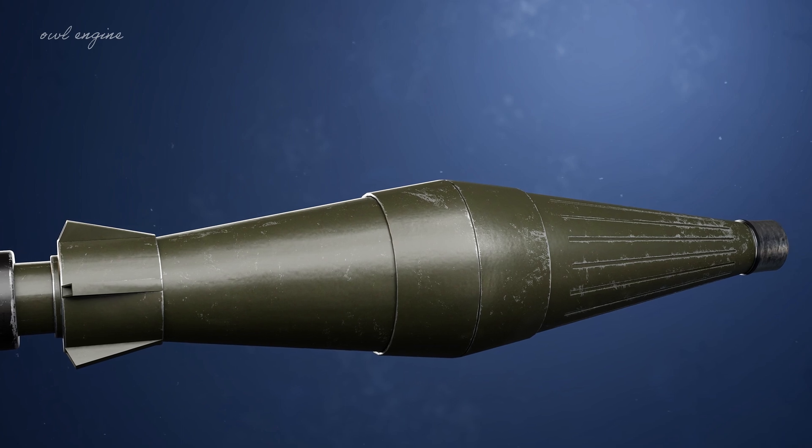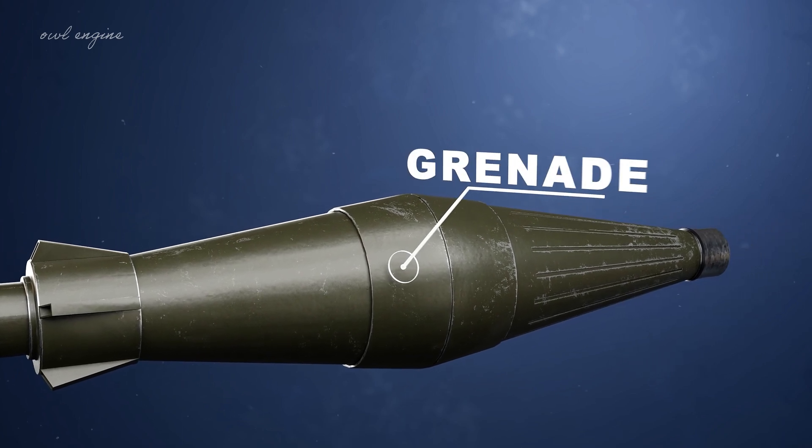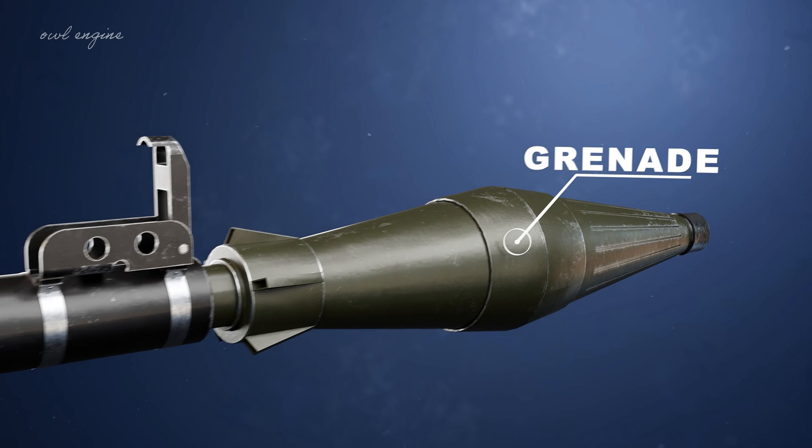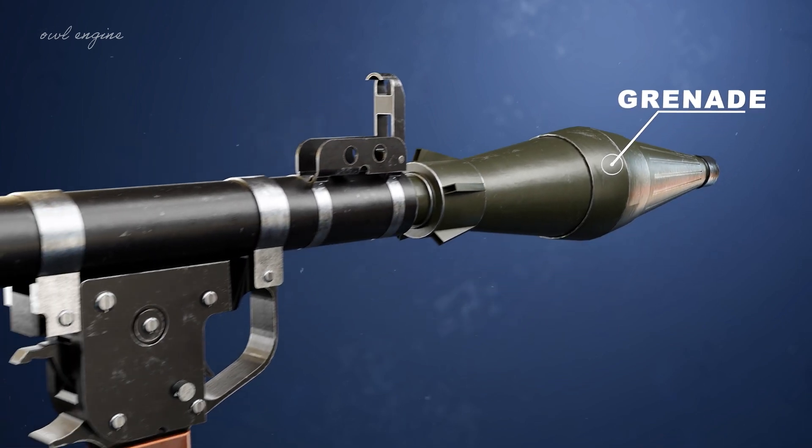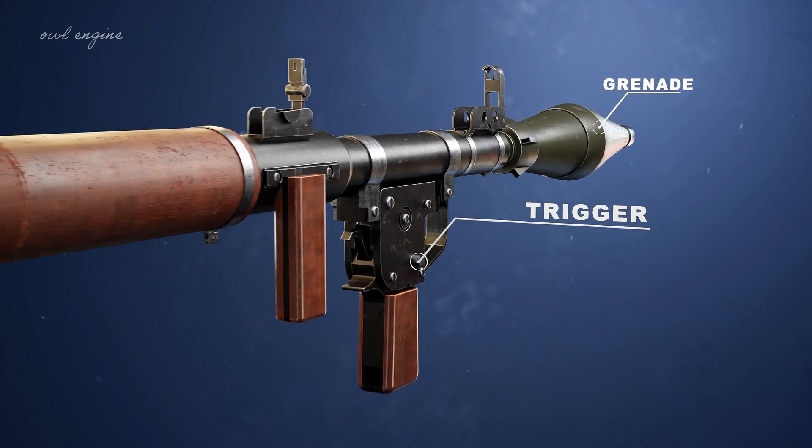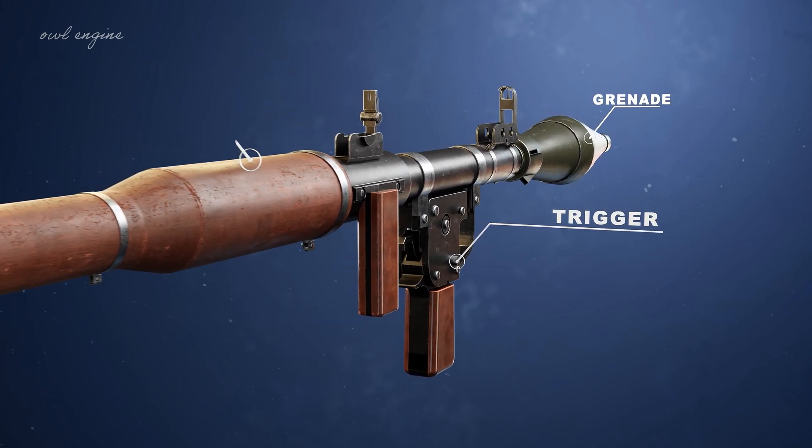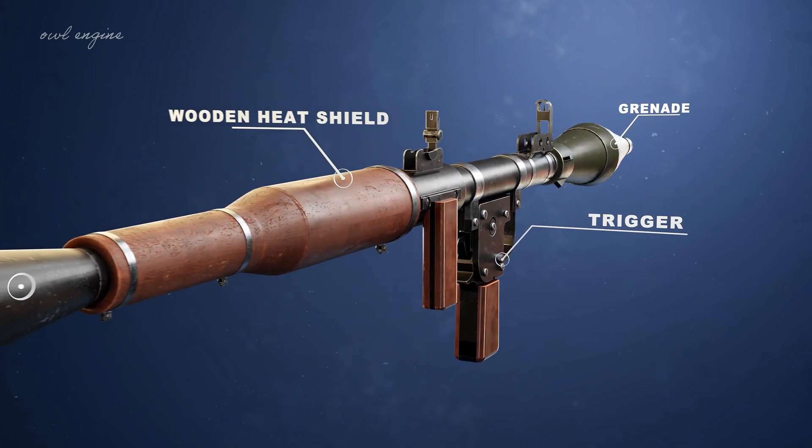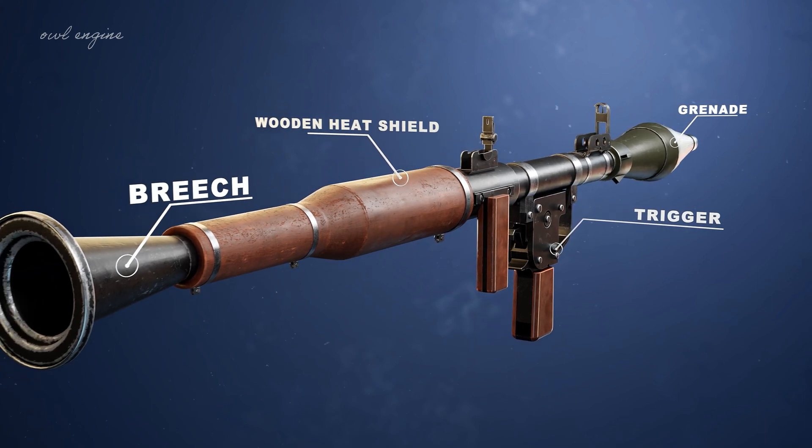The main parts of the RPG-7 are: number one, the grenade; number two, the trigger; number three, the wooden heat shield; and number four, the breech.